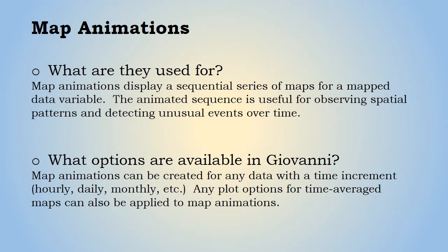Map animations are used to display a sequential series of maps for a mapped data variable. The animated sequence of images is useful for observing spatial patterns and detecting unusual events over time. In Giovanni, map animations can be created for any data with a time increment: hourly, daily, monthly, etc. Any replotting options for time average maps can also be applied to map animations.